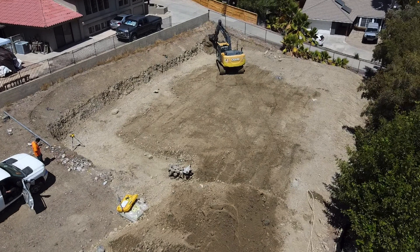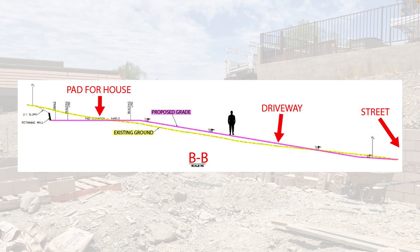As a quick recap from our previous grading video, here is a snapshot of the lot. The original grade sloped pretty significantly from the back down to the front. In this sectional view of the plans, the yellow line shows the existing grade sloping from back to front where the street is, and the pink is the proposed grade we graded to — a nice flat area at the top for the house, with the proposed grade for the driveway heading down to the street.